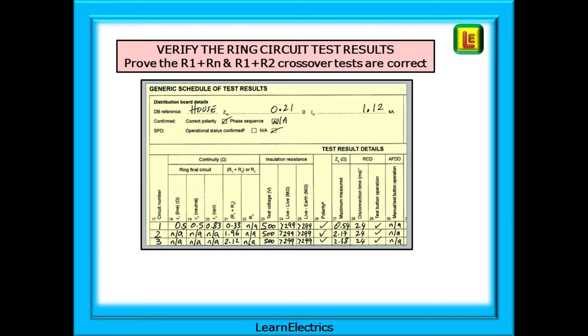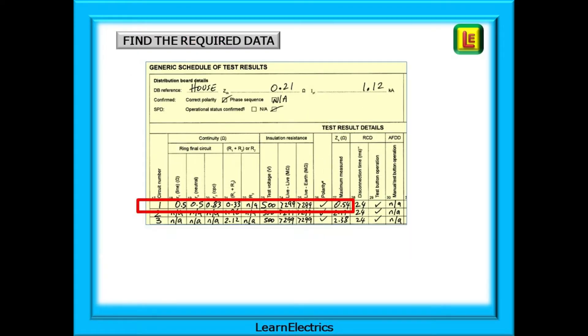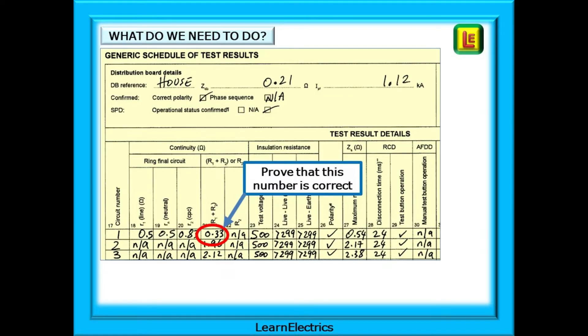We want to verify the ring circuit test results. Can we prove that the R1 plus R2 crossover tests are correct and the results are valid? Shown here is a copy of the schedule of test results, the sheet that lists the test result details. We need to find the required data for the ring circuit, which happens to be circuit number 1. This data has been highlighted by the red box.